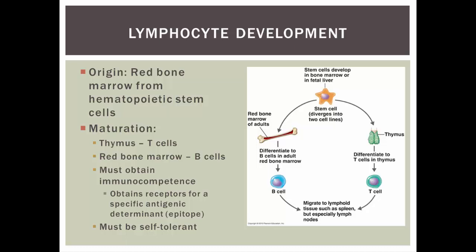How do we make these T cells? It all starts in the red marrow with hemopoietic stem cells. These stem cells diverge into lymphocytes, which will then either remain in the bone marrow and differentiate into B cells, or leave the bone marrow, go to the thymus, and differentiate into T cells. It's very convenient — B cells for bone marrow, T cells for thymus — so we can remember where they came from.